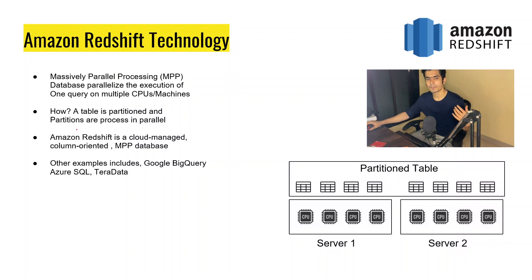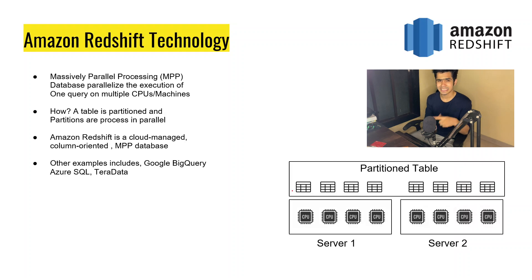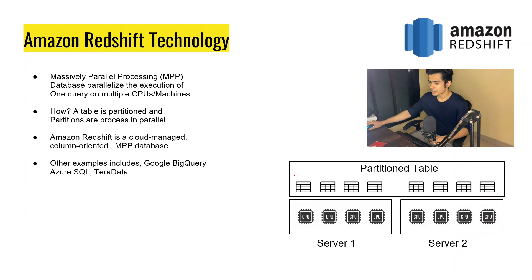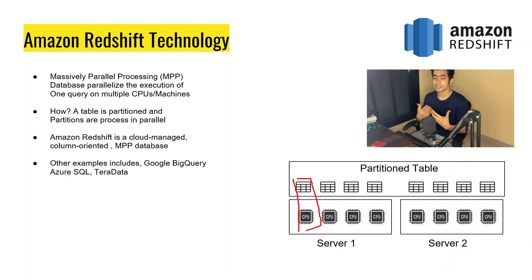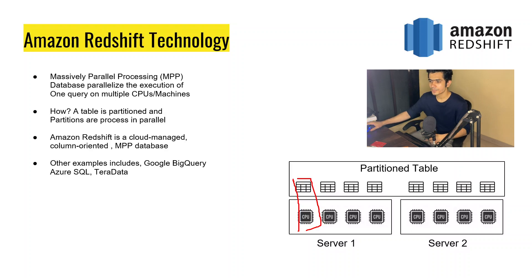Tables in Redshift are partitioned and those partition tables are processed in parallel. When we create a table in Redshift, we partition it based on some column — such as state, or by months, or any column that is good for partitioning. Based on that, it executes everything partition by partition, allowing it to process all that data in parallel. It is also column-oriented.